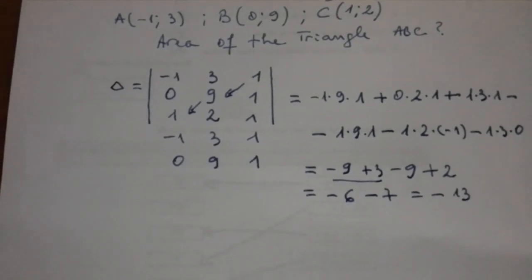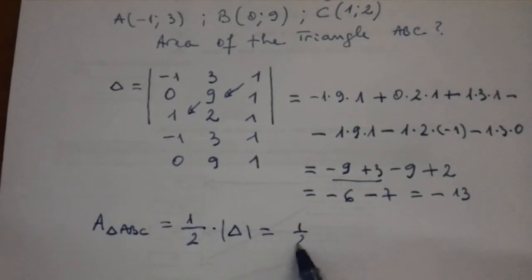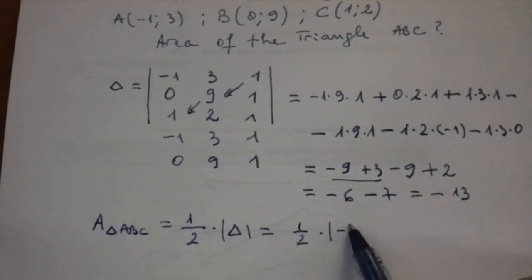And now we can write the area of the triangle, so 1 over 2, 1 over 2, and this is the area of the triangle ABC.